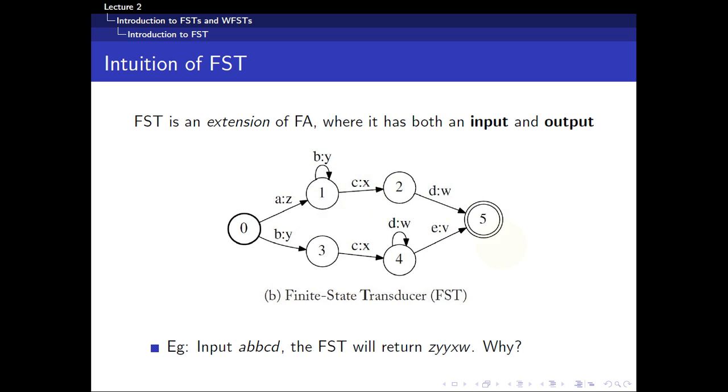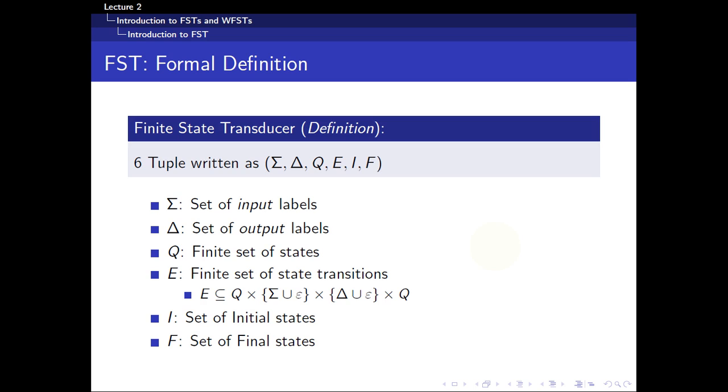So this is basically what a finite state transducer is. Now, a formal definition of a finite transducer is that instead of a 5-tuple, it's written as a 6-tuple. The difference is again, of course, of the inputs and outputs. So you can see now, instead of having a as one single alphabet, now you have two sets of input labels and output labels. Now, the rest are mostly the same, except for the set of state transitions.